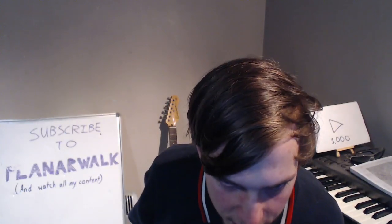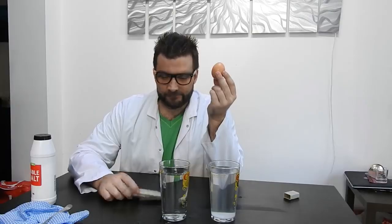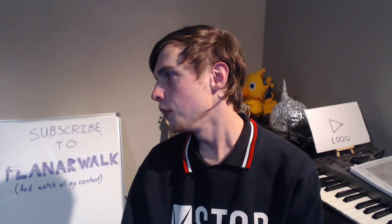Get ready for this voice some more. One thing to note here is that X refers to independent variable and Y refers to dependent variable. Sometimes the X variable can't actually be controlled, but only chosen by the researcher. This is especially the case when some version of time is the X variable. However, be careful — just because a variable includes time does not mean it is automatically the X variable. Sometimes the amount of time a process takes is the effect of a treatment, and then it's the Y variable.